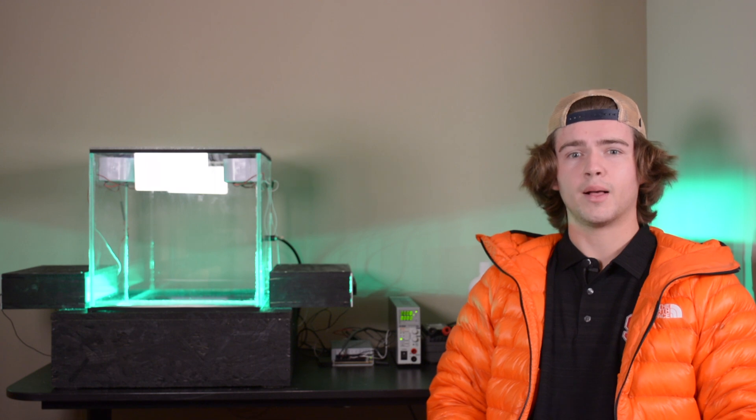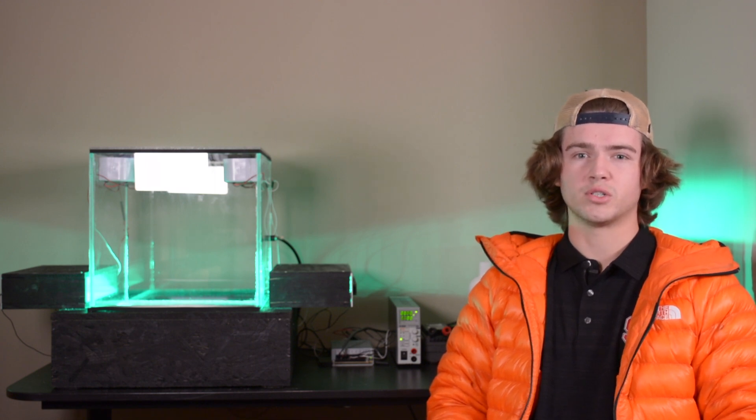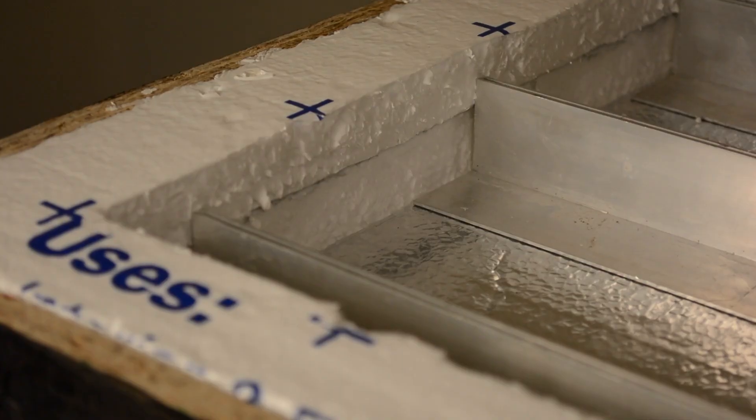The base of the system is constructed of painted plywood with a reflective insulating layer applied to one side of the wood. However, the primary insulation comes from the 2 inch thick rigid foam insulation that lines the inside of the wooden base.